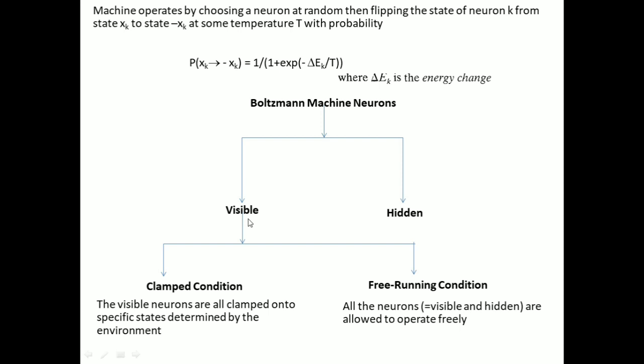In the visible neurons, there are two modes of operation: the clamped condition and the free-running condition. In clamped condition, all visible neurons are clamped down to a specific state determined by the environment.